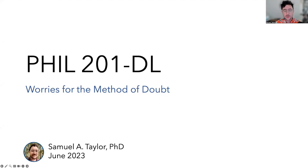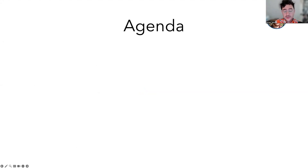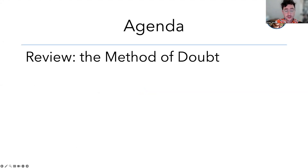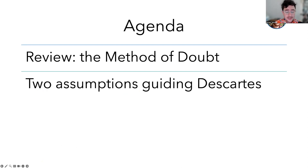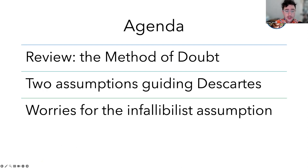Hey there class, hope you're doing well today. In this video, we're going to focus on reviewing what the method of doubt is. Then I'm going to tease out two assumptions that seem to be guiding the way that Descartes is using this method, and then we're going to look at a worry for one of those assumptions — what we're going to call the infallibilist assumption that Descartes seems to be making.